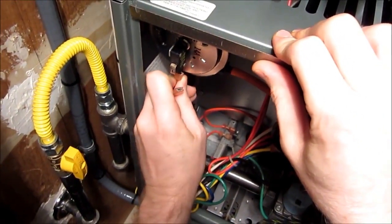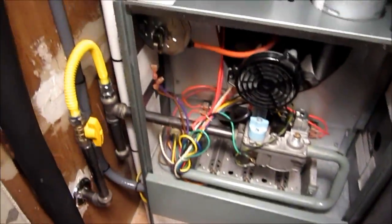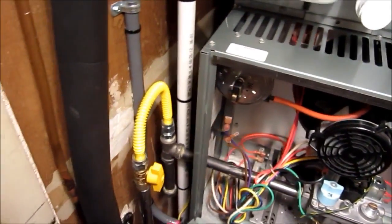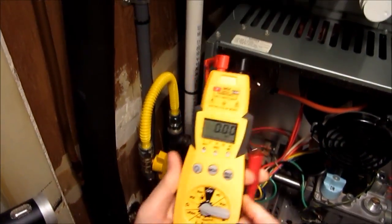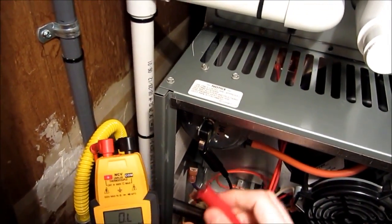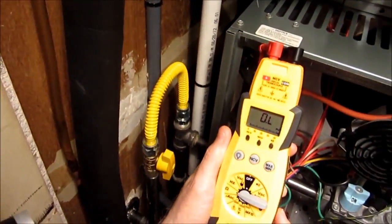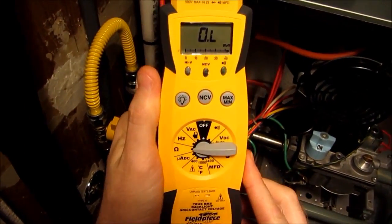Okay. Go ahead and get your HS36, your Field Piece, your brand new Field Piece and set it to ohms. Take one lead on one and one lead on the other. We should read open line here. That's what it says. We're reading open line. There you go.